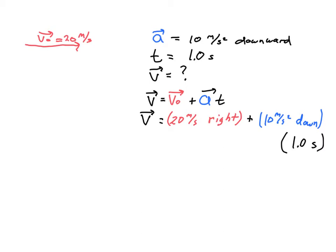So then we're going to do our next line here. I'll go ahead and take care of that scalar, one second times 10 meters per second squared. So the 20 meters per second, that's not going to change at all. 20 meters per second to the right. And then plus 10 meters per second squared downward times one second. That's just going to be 10 meters per second downward.